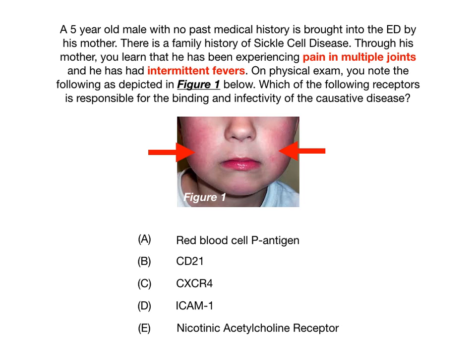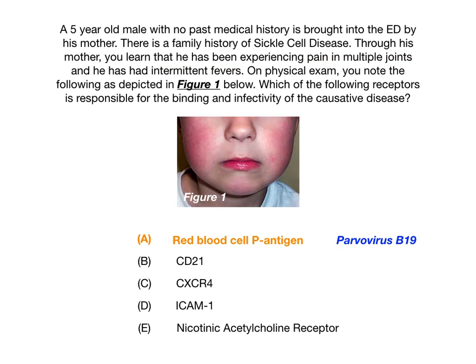This classically occurs in children. So the question becomes: what receptor does parvovirus B19 use to bind and infect a host? The answer is A — the red blood cell P antigen — because we're talking about parvovirus B19.